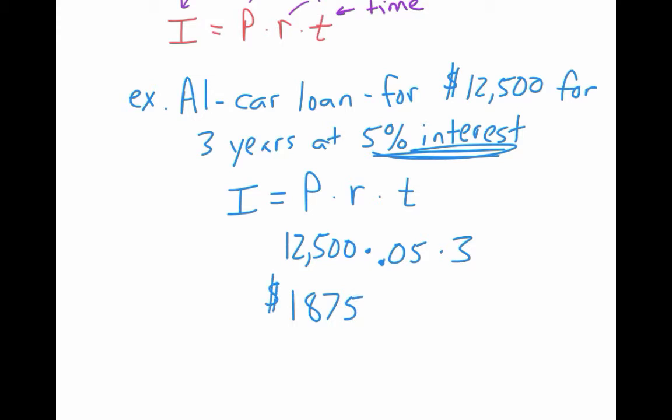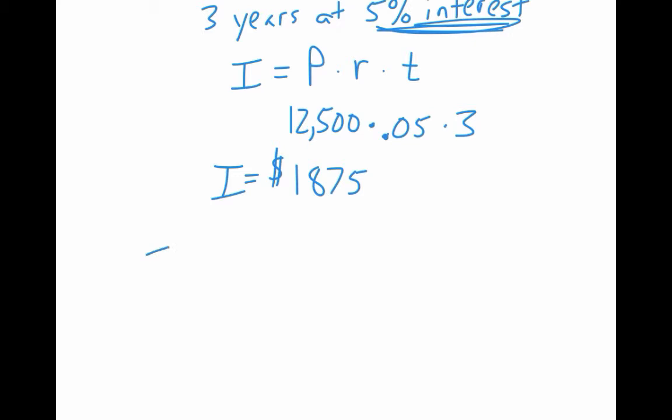So $1,875, is that the total he has to pay? That'd be awesome. I got a $12,500 car for $1,000. That's the interest that he has to pay. So he'd still have to pay the $12,500 plus $1,875. Watch the questions a little bit. If they say what's the total cost of the loan, then you'd have to add in the starting amount. If they say how much interest is it, just use this equation. So if you wanted the total, you could do something like this here. The total is going to be the principal plus the interest.